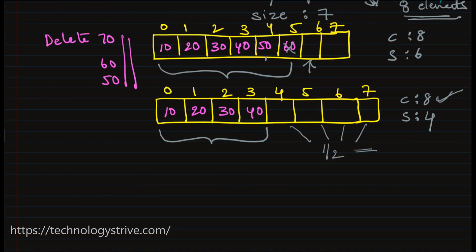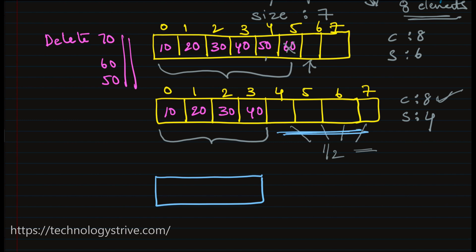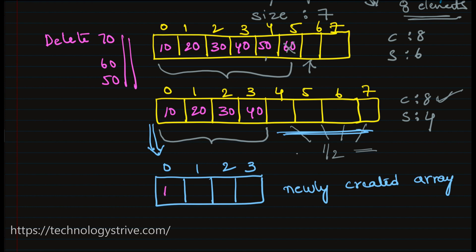As we are not using half of the space, we want to reduce the array size — that is the concept of dynamic array. We first create a new array which is half of this size, because half of the size is not filled. The new array size will be 4, and then we copy elements from the actual array into the newly created array. Once we have created the new array and copied the elements, we just update the array reference to point to the newly created array. This is how we shrink the array.